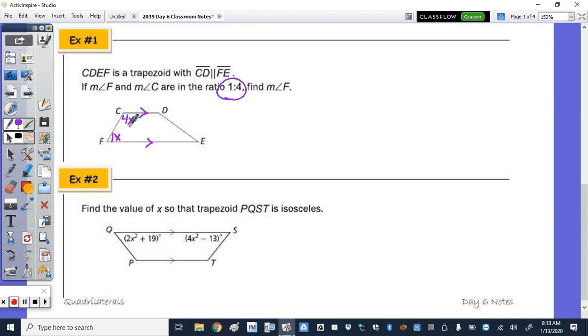And those two angles, the consecutive angles or angles along a leg, they're along leg CF, are supplementary. So X plus 4X equals 180. Combine like terms. Divide by 5 and X is 36. Find the measure of angle F. So therefore, the measure of angle F, because that measure was the 1X, is equal to 36 degrees.